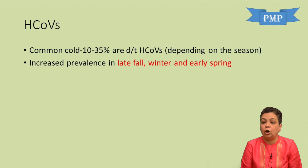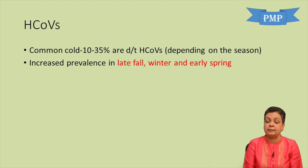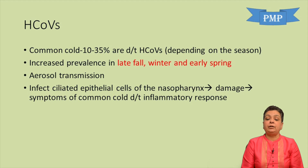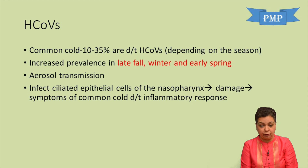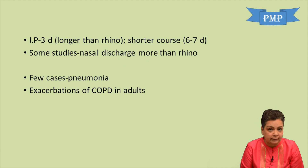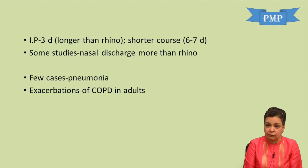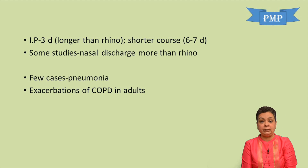Human coronaviruses cause common colds. Ten to 35 percent of common colds are due to human coronaviruses, depending upon the season. Increased prevalence is seen in late fall, winter, and early spring. They are transmitted via aerosols; the ciliated epithelial cells of the nasopharynx are damaged, leading to symptoms of the common cold due to the inflammatory response. Incubation period is three days with a shorter course of six to seven days. Some studies show they are associated with nasal discharge more than rhinoviruses. They can also cause pneumonia and exacerbations of COPD in adults.